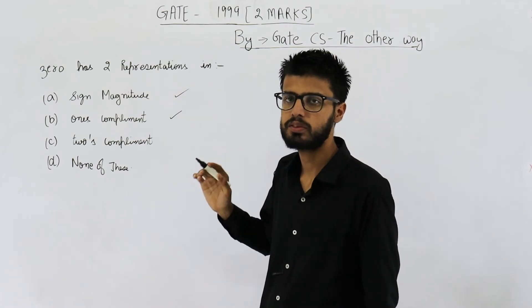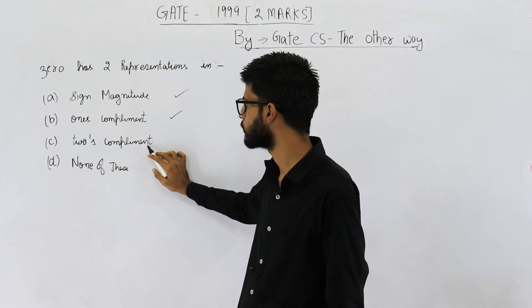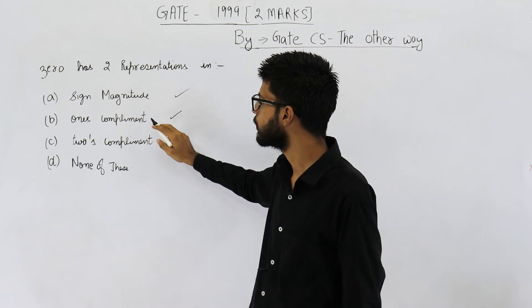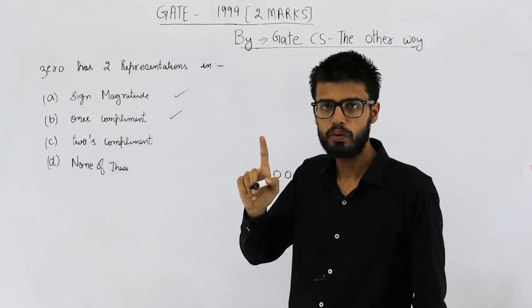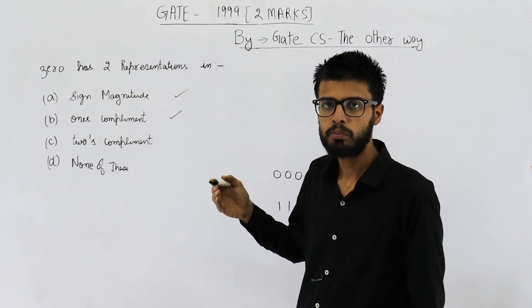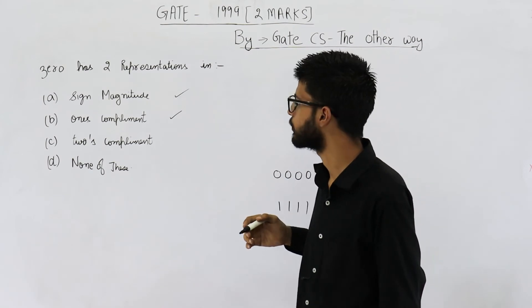Rather, every number has unique representation in this. Only in sign magnitude and one's complement, we waste one combination. That means zero has two representations.